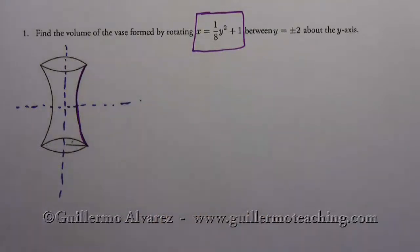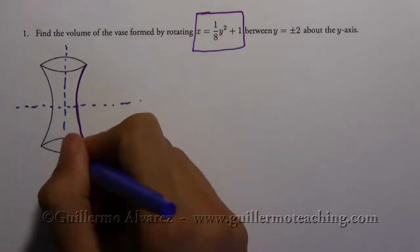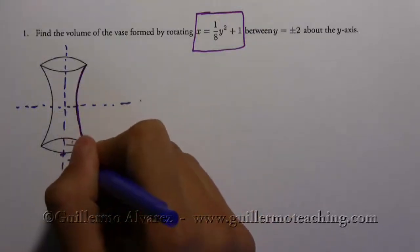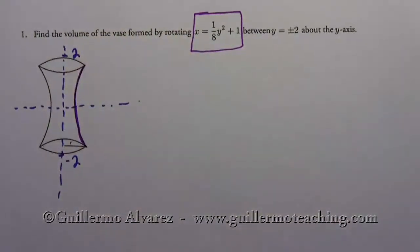And then down here is plus or minus. So this is y equals negative two and then here's plus two. So that's how tall the vase is.